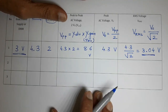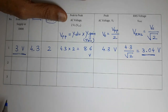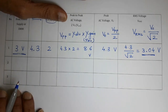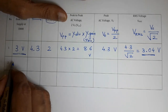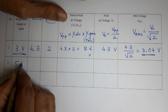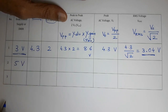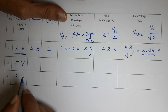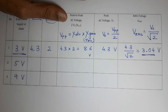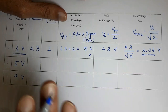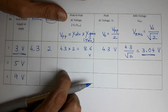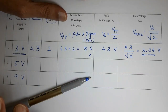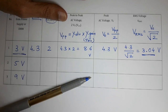Now we will repeat this procedure for other voltages such as 5 volts, 7 volts, 9 volts, and 10 volts. We can take different values and repeat the same procedure. Using CRO in this way, we can calculate the RMS value of AC voltage.